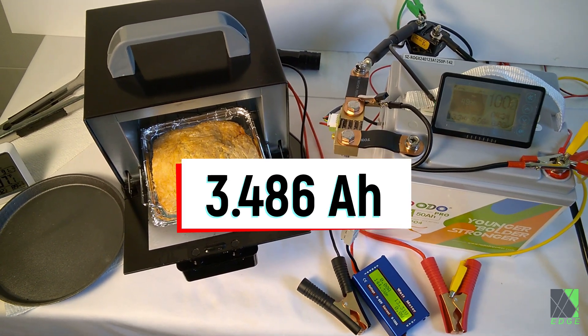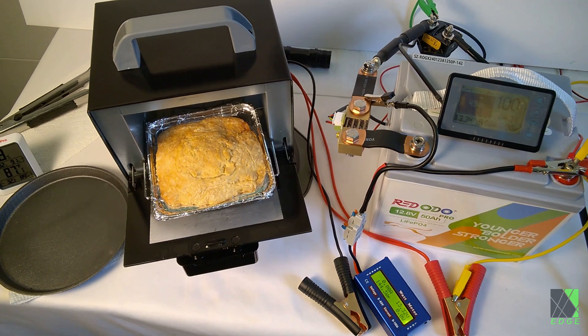The red ODO 50 amp hour battery has about 600 watt hours of storage. So in theory, once preheated, this oven could cook 13 pieces of bread.